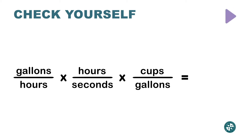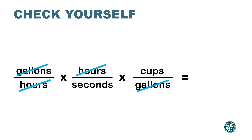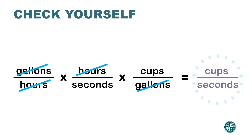We have three rates. First I'm going to check: can I cancel out the word 'gallons'? Yes — gallons on the top with gallons on the bottom. Can I do more? Yes — hours on the bottom with hours on the top. Can I do more? No. Check what word is left on the top and what word is left on the bottom: we have cups over seconds.